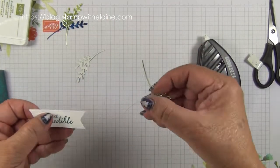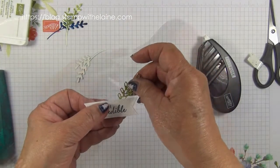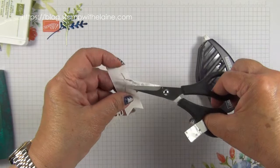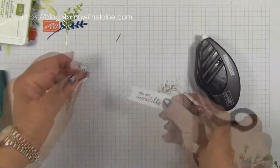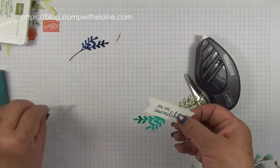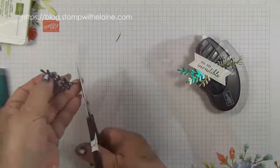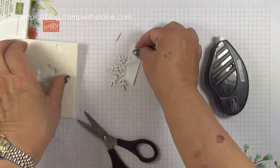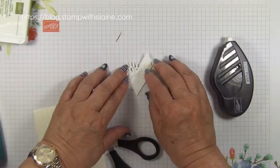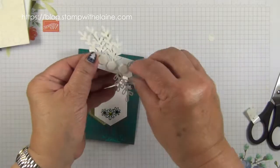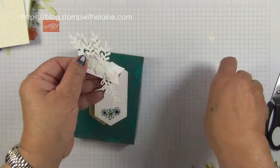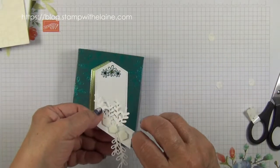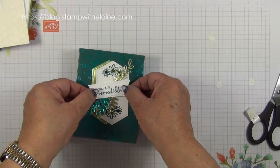And then you can arrange your feathers on the back. Pop dimensionals on, take the backing tape off, and pop it on the box.